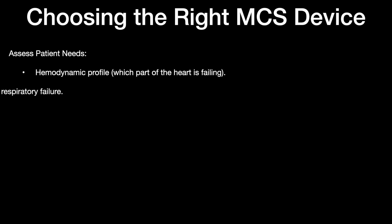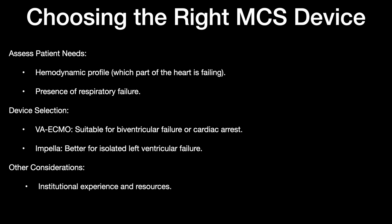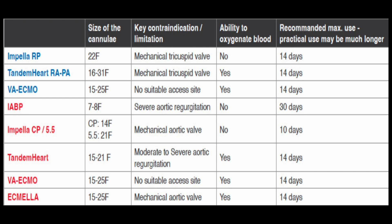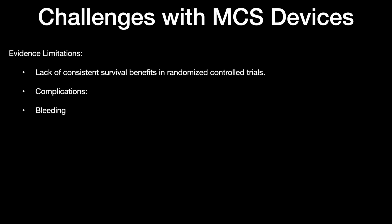How do we choose the right mechanical circulatory device? Assess the patient's hemodynamic profile, which part of the heart is failing, and whether respiratory failure is present. VA-ECMO is suitable for biventricular failure or cardiac arrest; Impella is better for isolated left ventricular failure. Other considerations include institutional experience, available resources, and potential risks and complications. Challenges with MCS devices include limited evidence, lack of consistent benefits, and complications such as bleeding, limb ischemia, and hemolysis, requiring careful anticoagulation protocols and close monitoring.